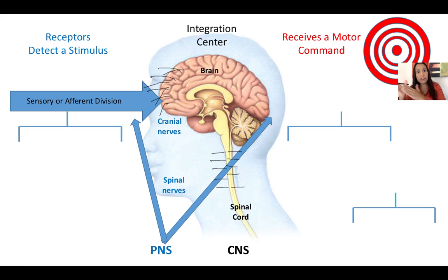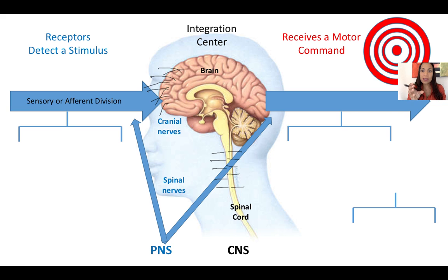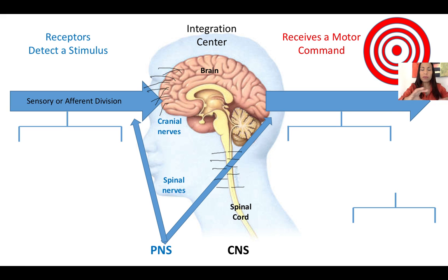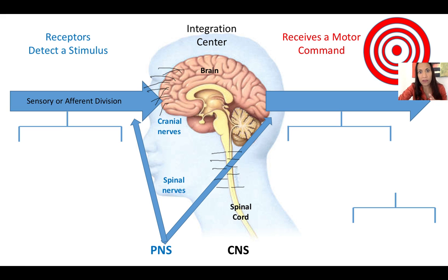We have another division — the executive branch — the one that carries the motor command after that sensory information arrives to the central nervous system. The central nervous system processes and organizes that information, and based on those stimuli, creates a motor command. That motor command is going to exit the central nervous system following another set of nerves or fibers that we call the motor or efferent division — efferent with an E.